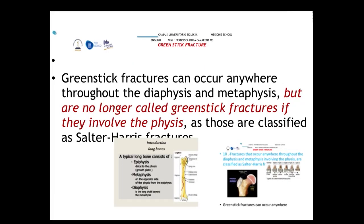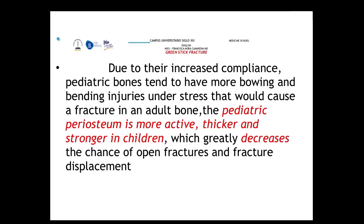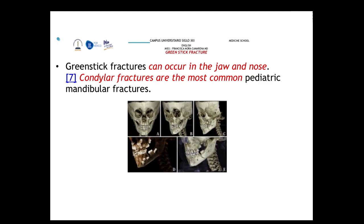When the greenstick fracture goes through the diaphysis and metaphysis, it is called a greenstick fracture. When it involves the physis, it is classified as a Salter-Harris fracture. Because of the increased compliance of pediatric bones, children have more bowing and bending injuries than adults. Greenstick fractures can also occur in the jaw and nose; condylar fractures are the most common pediatric mandibular fractures.